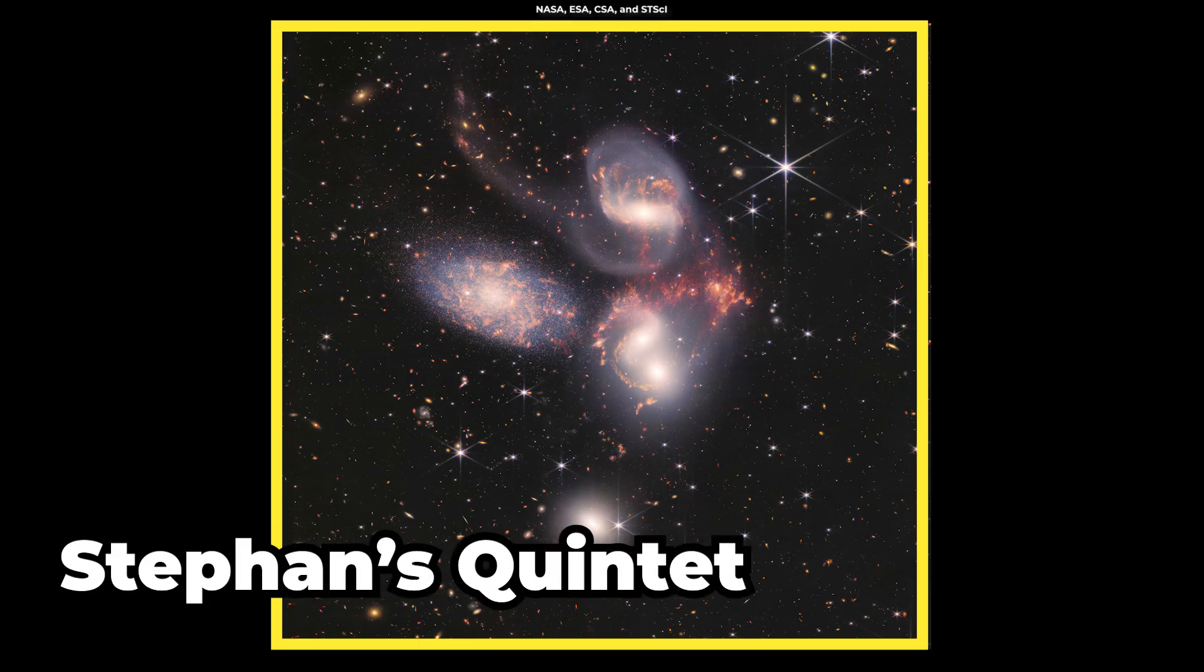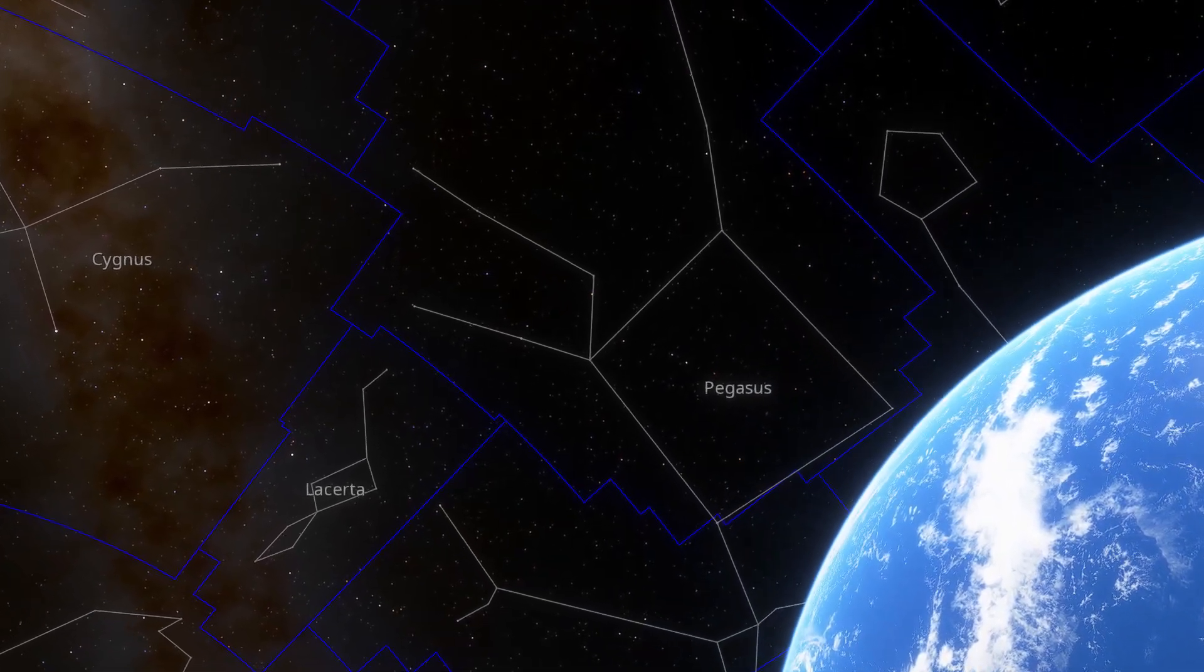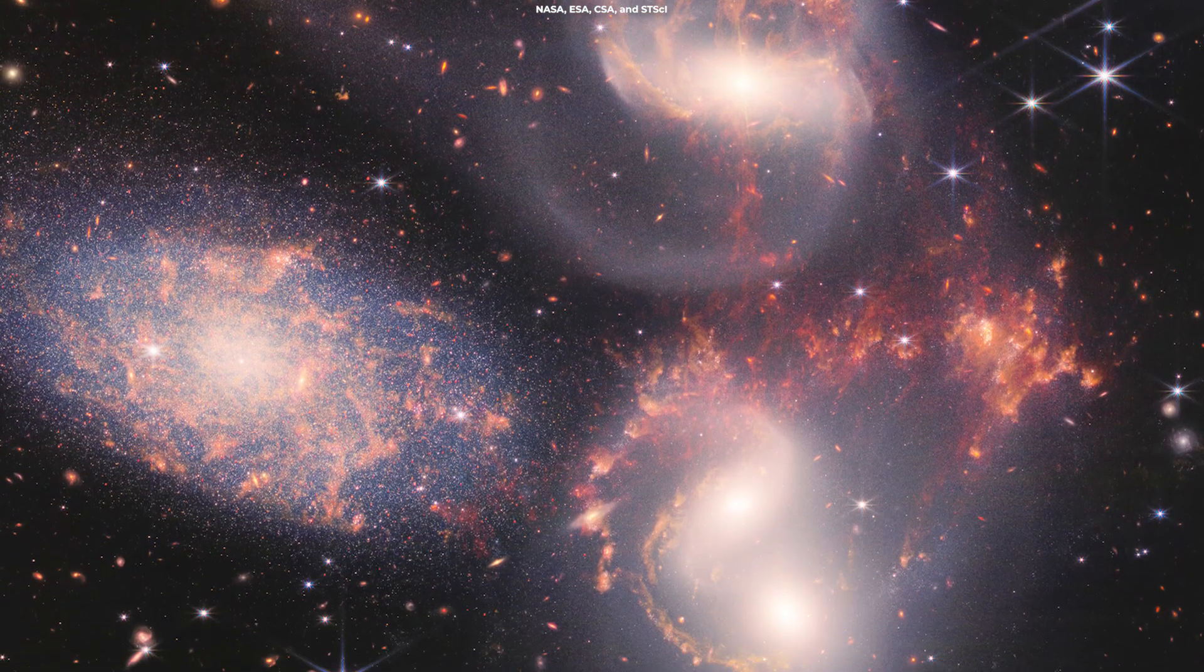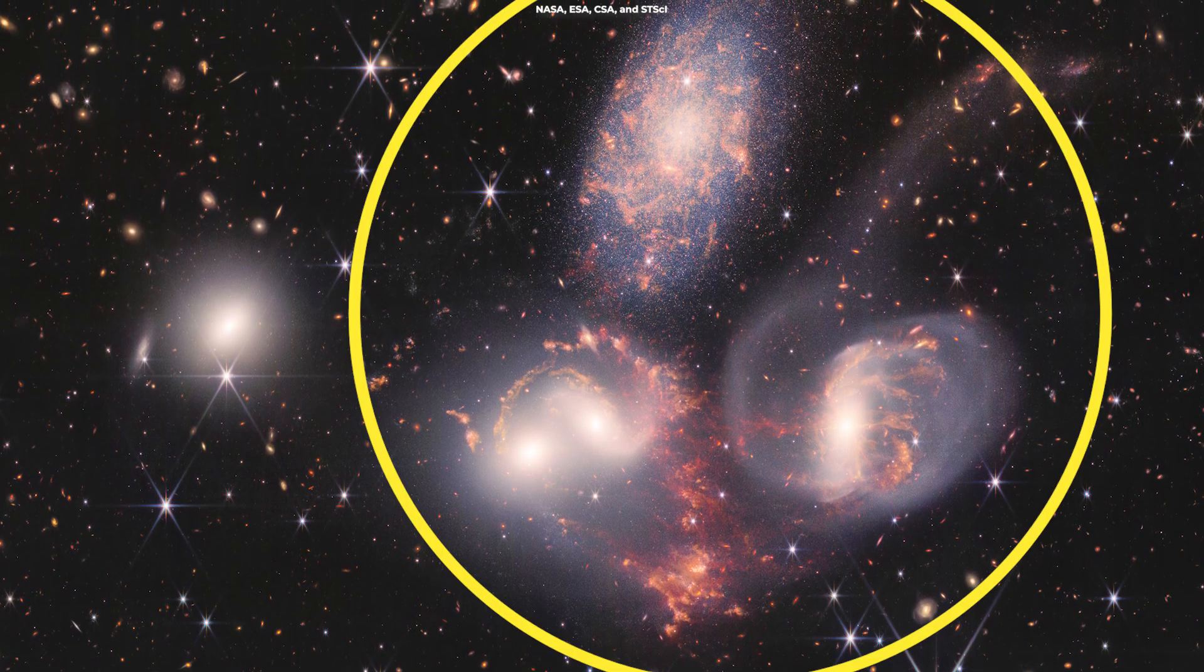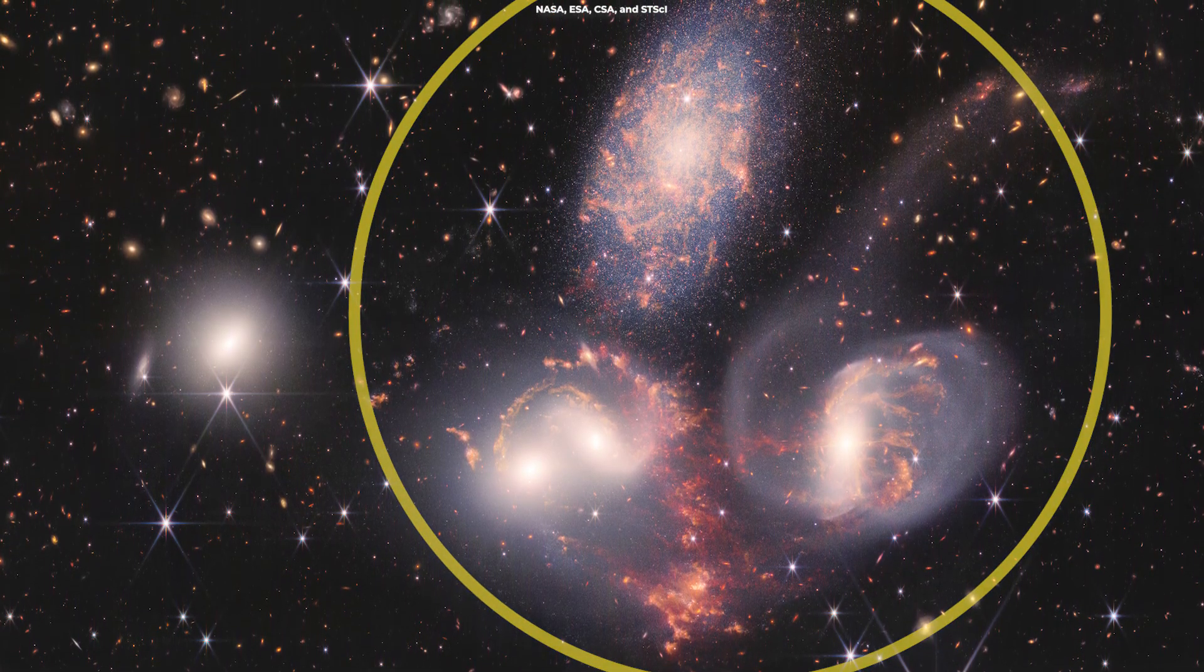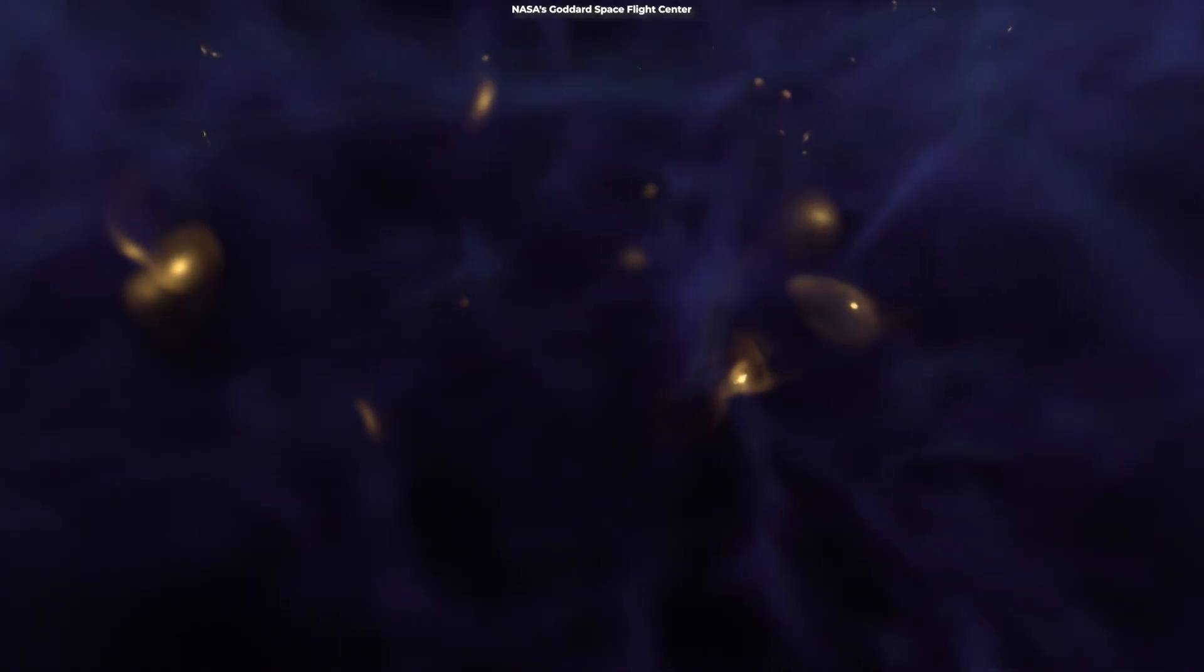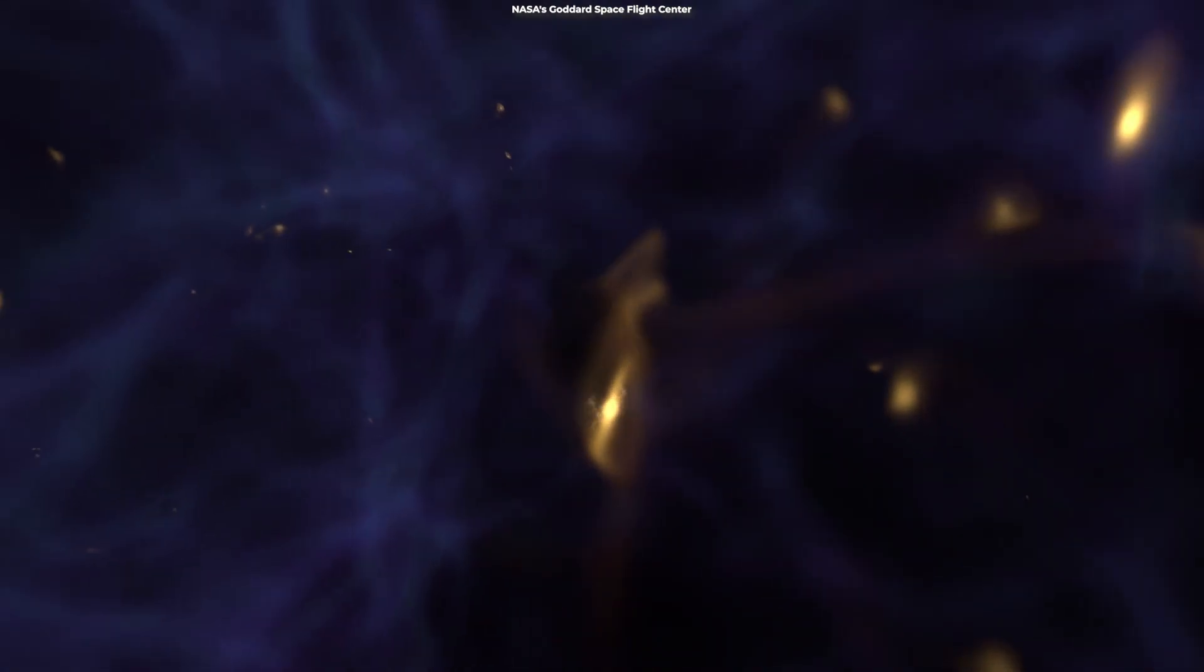The next image shows the Stevens Quintet about 290 million light-years away in the constellation Pegasus. It's mostly known for being the first compact galaxy group ever discovered in 1787. Four of the five galaxies within the Quintet are locked in a cosmic dance of repeated close encounters. These galaxies are in a collision course, pulling and stretching each other in a gravitational dance.